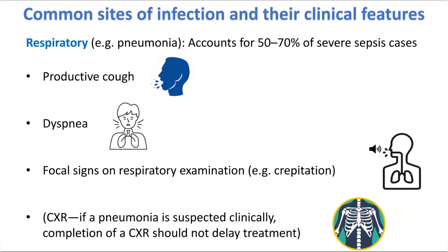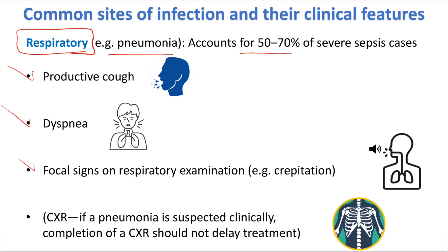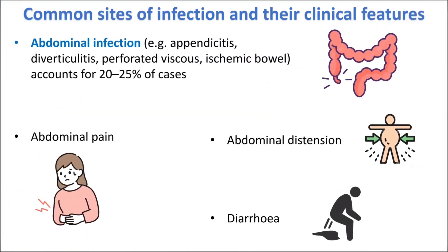The commonest site of infection is respiratory, mostly pneumonia, accounting for about 50% to 70% of severe cases of sepsis. The patient presents with productive cough, shortness of breath, and focal signs on respiratory examination like crepitations. Chest X-ray may confirm pneumonia clinically, but as noted, chest X-ray should not delay the treatment of sepsis.